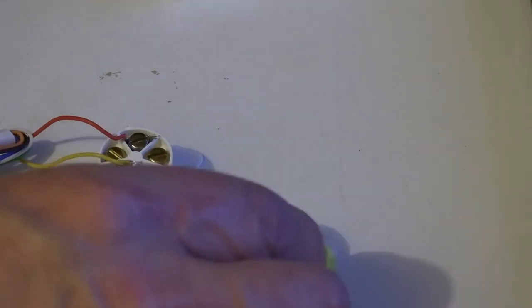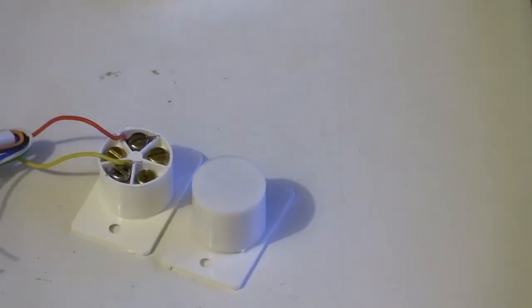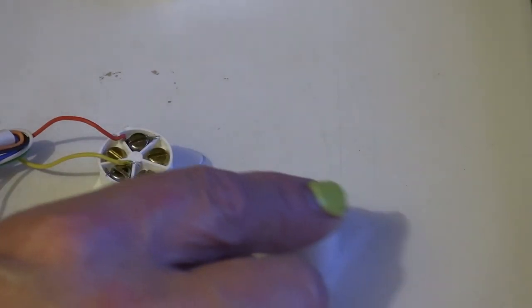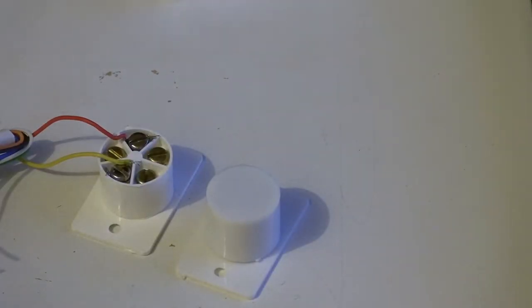But these are flush. Magnet comes towards it, circuit is made. Magnet goes away, circuit is broken.